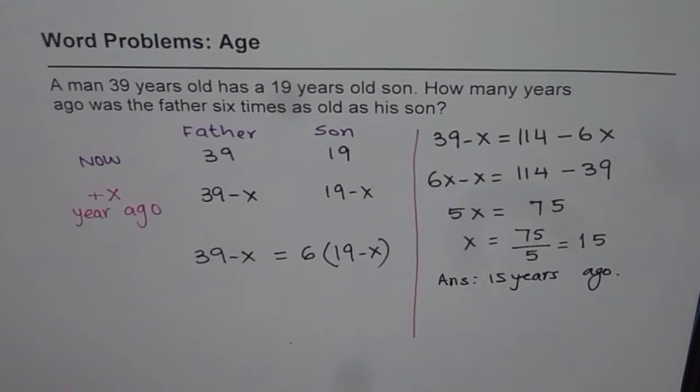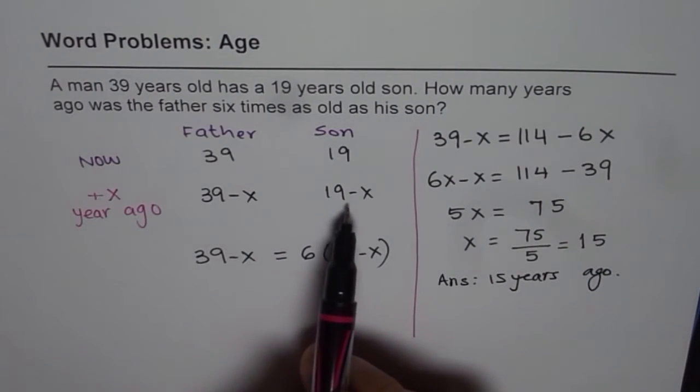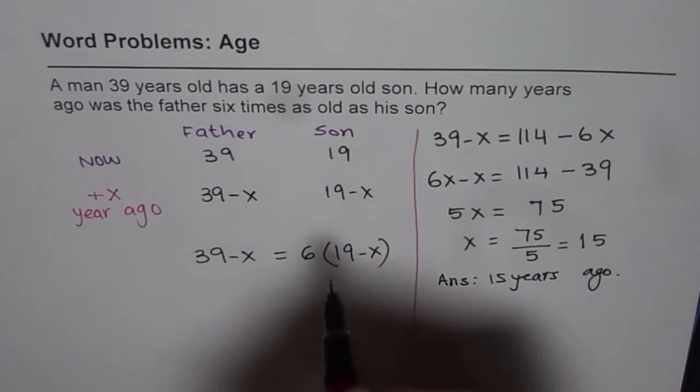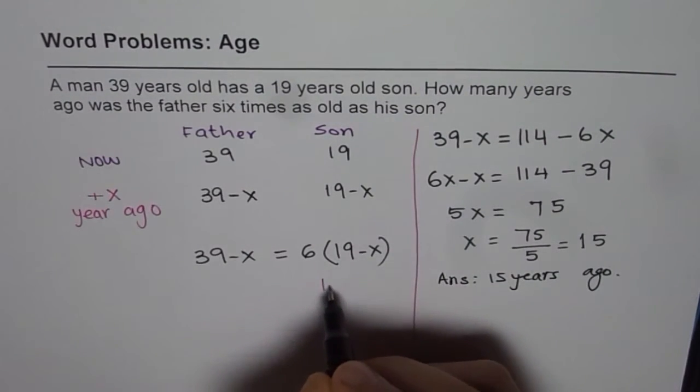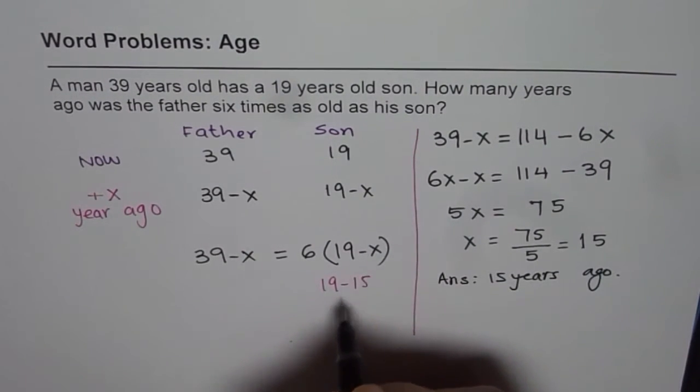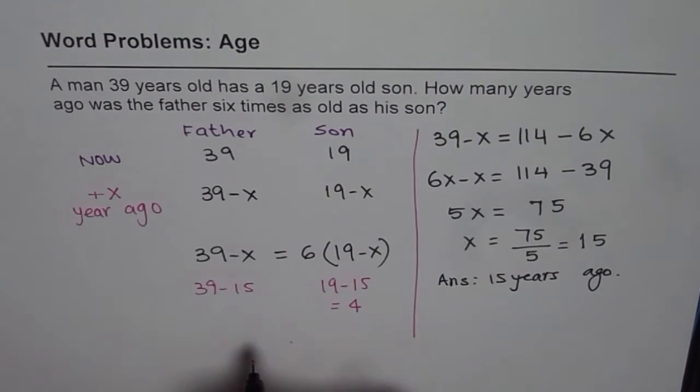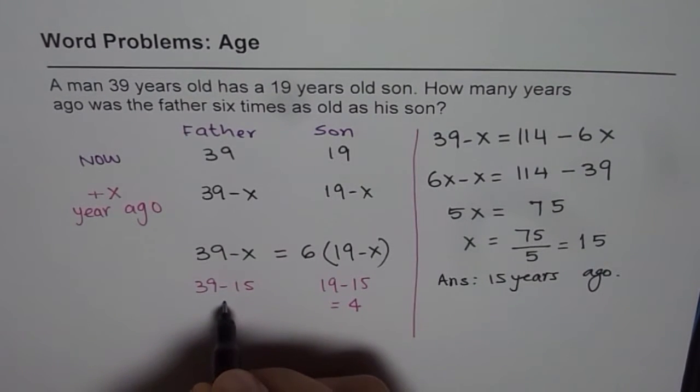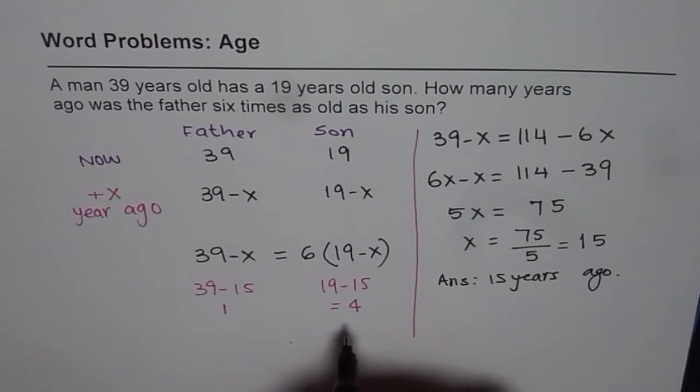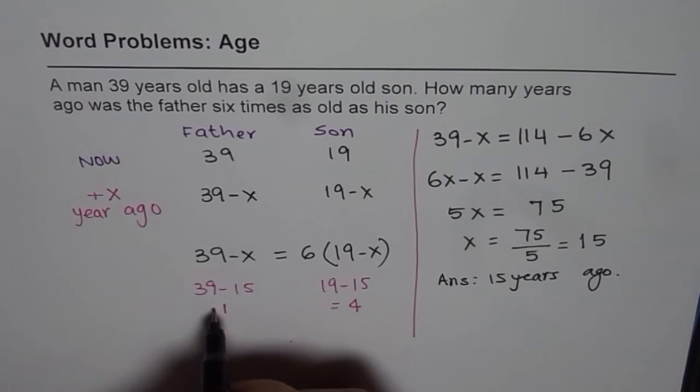So what you can do is, you can check. So if I take away 15 from here, what do I get? If I do 19 minus 15, this is equal to 4. And 39 minus 15 is equal to 16. So 24.